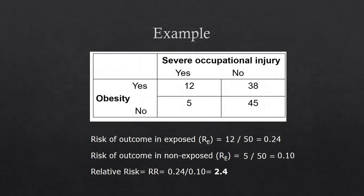So let's give you guys an example. So here we have, and this is just a complete example. I just made up the numbers. I just made up the whole thing up just to make it very simple for you guys to see. So here we have the exposure group, which is the obesity. And here we have the outcome is severe occupational injury.